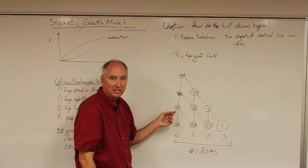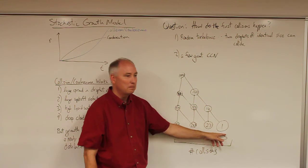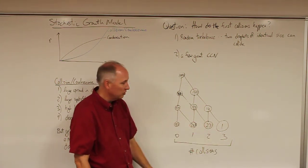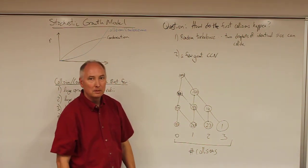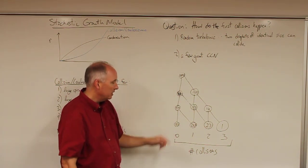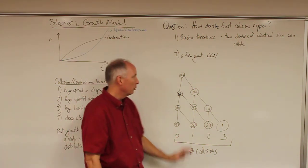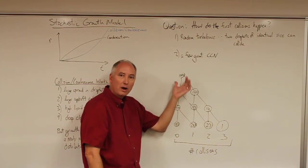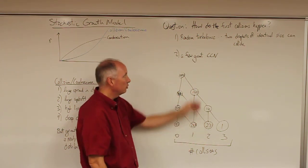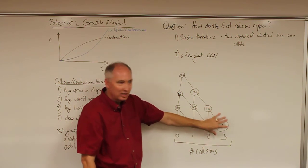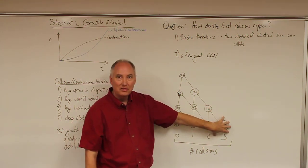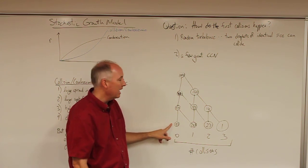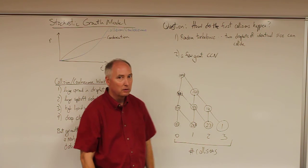In the third step, applying ten percent again: ten percent of ten gives you one droplet that has undergone three collisions, 27 droplets that have undergone two collisions, 243 droplets that have undergone one collision, and 729 droplets out of the original 1,000 that have not undergone any collision at all. This is one mechanism by which random turbulence can produce a single droplet that is larger than the population and can jumpstart the collision coalescence process.